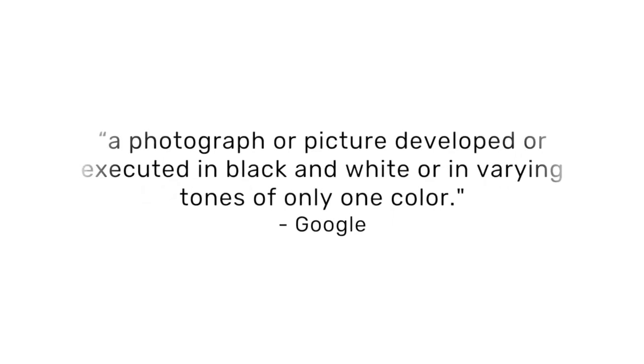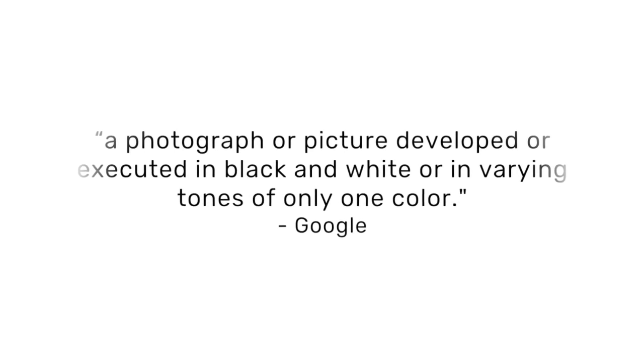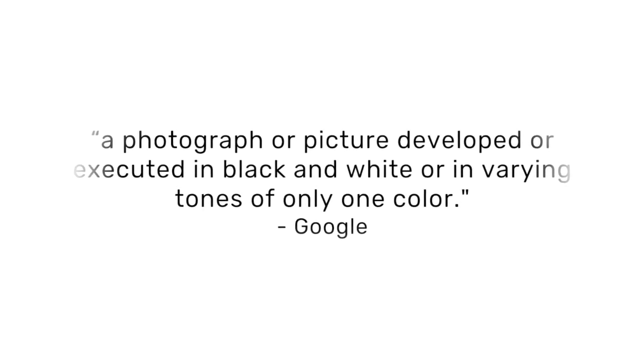Google's definition of monochrome is a photograph or picture developed or executed in black and white, or in varying tones of only one color. So that means we have one color — either black and white, varying shades of grey, or you can choose another color in a different scale of values. We're going to create paintings that are mostly done in one color — it can be different shades of grey, pink, yellow, or blue.